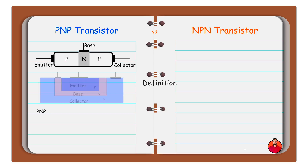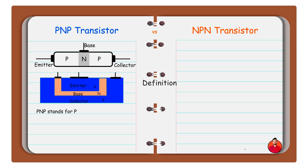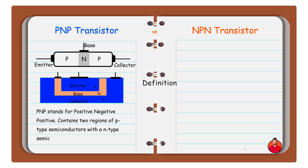In PNP transistor, PNP stands for positive-negative-positive. It contains two regions of P-type semiconductors with an N-type semiconductor in the middle.